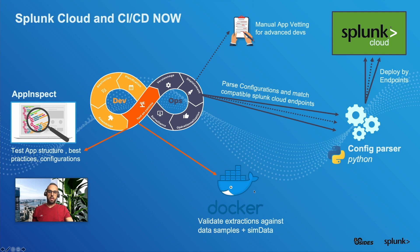The second test I added to this pipeline is done using a Docker container where I installed a specific version of Splunk. The goal is to test the new application version against the targeted Splunk version, then generate some sample events and test the extraction of mandatory fields.